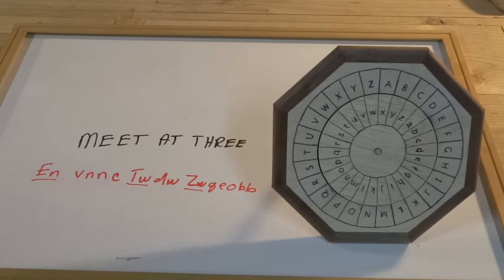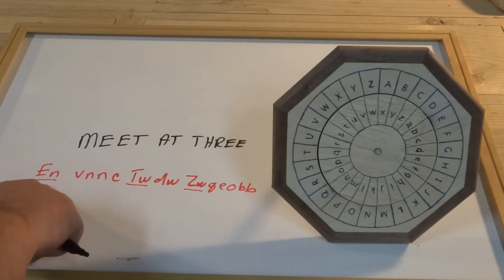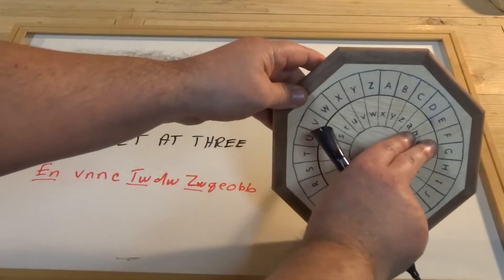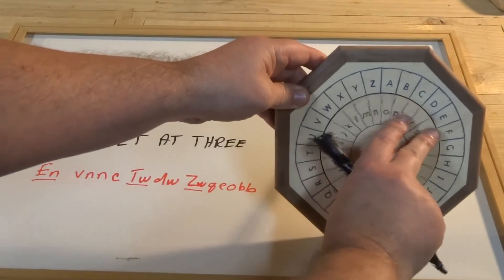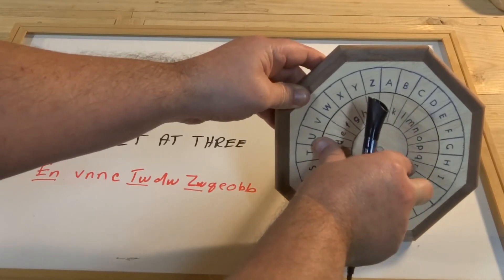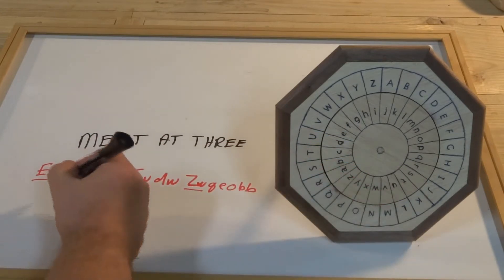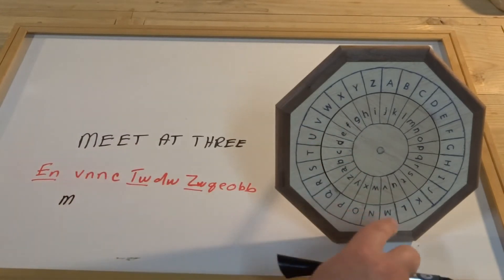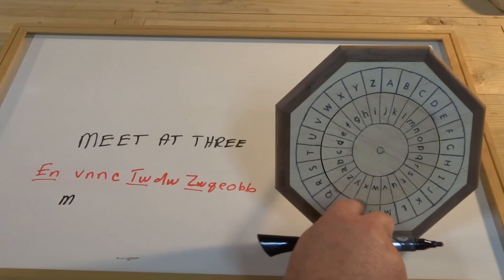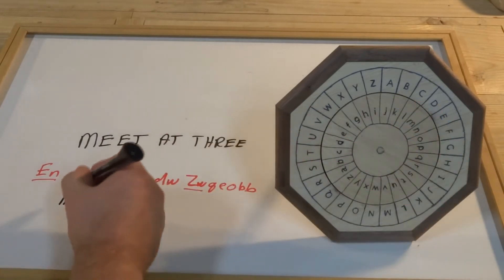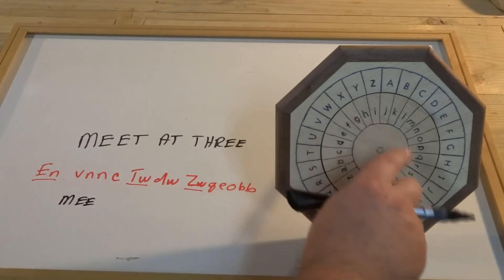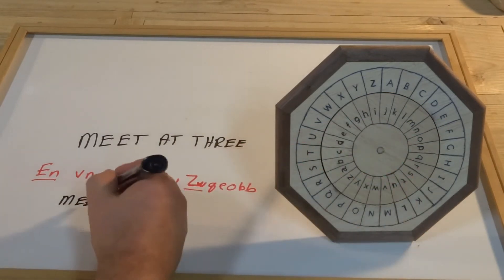Now if we want to decode it, it works just the same as before. So we see E and N, we see the capital letter, the lowercase, we know that's an index. So we set the wheel. And then we start decoding. So V on the inner ring is M, N is E, and C is T, of course.